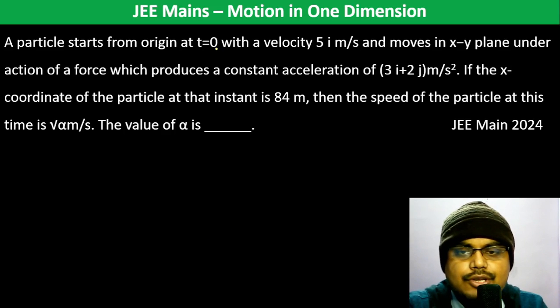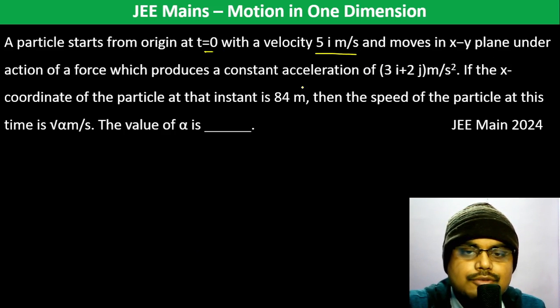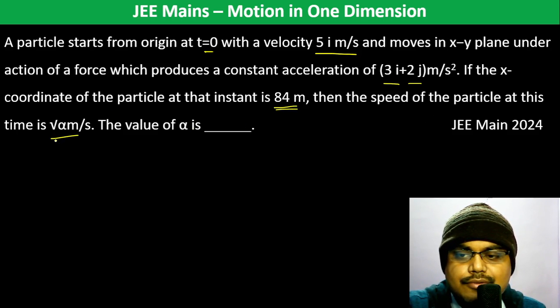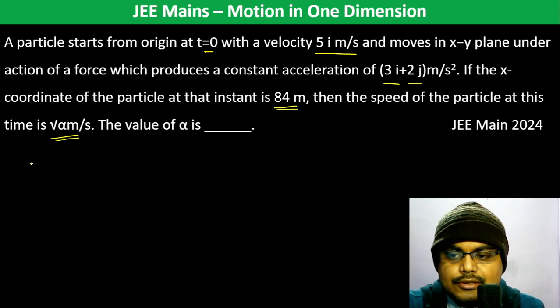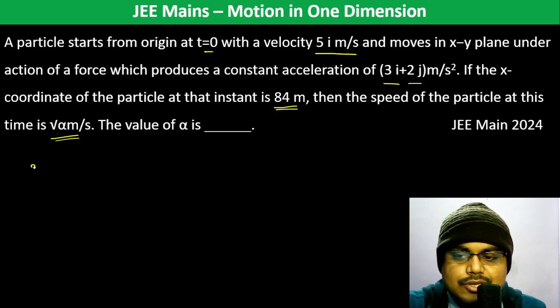A particle starts from origin at t=0 with velocity 5i m/s and moves in xy plane under action of a force which produces constant acceleration of 3i+2j m/s². If the x-coordinate of the particle at that instant is 84 meters, then the speed of the particle at this time is √α m/s. Find α. In x-direction...